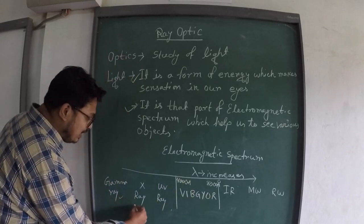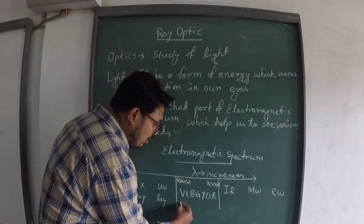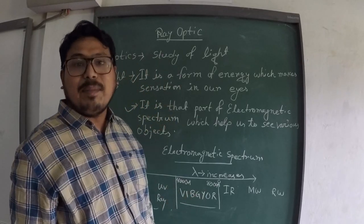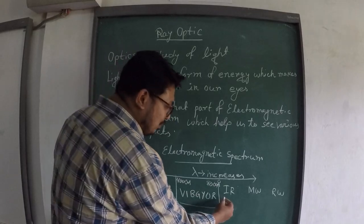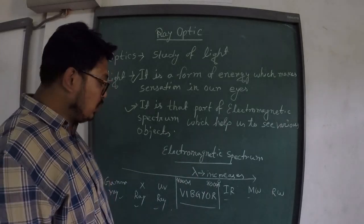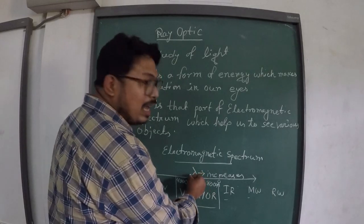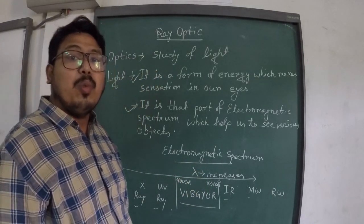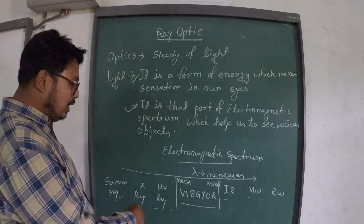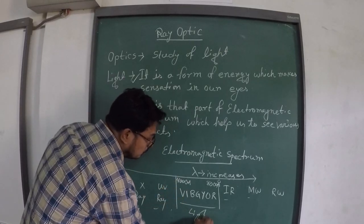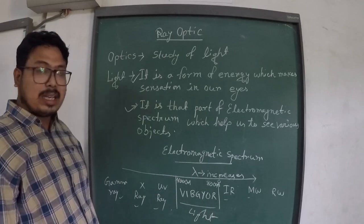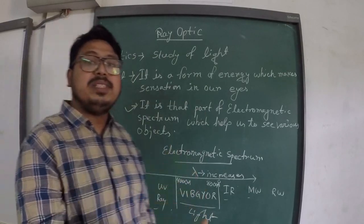The parts of the electromagnetic spectrum include: gamma rays, X-rays, UV rays, and the visible range — from 4000 Angstrom to 8000 Angstrom approximately. As you go from left to right, the wavelength of the waves increases. So, from 4000 Angstrom to 8000 Angstrom, these are the parts of the electromagnetic spectrum which enable us to see the objects around us.